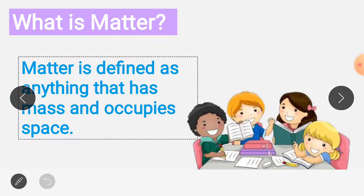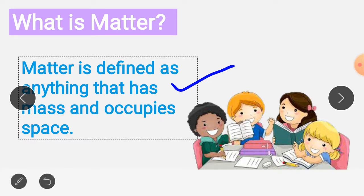Wherever you are sitting, look around. You can see things like your dining table, almirah, toys, books, and many other things. All these things are made up of matter. So what is matter? Matter is anything that occupies space and has mass. If anything is matter, it must have two properties: it should have mass, and it should occupy space.